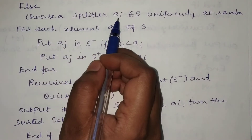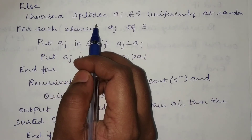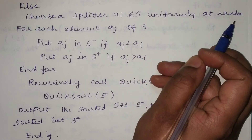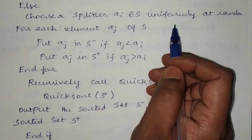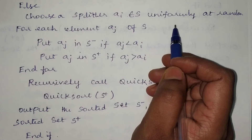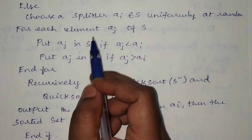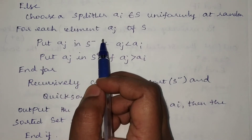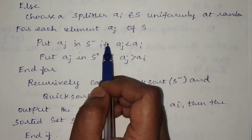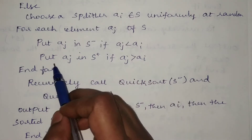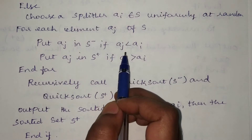Otherwise, go to the else part: choose a splitter ai that belongs to S uniformly at random. We randomly select any one element from the given input list, and based on the selected element we divide the given list into two groups. For each element aj of S, put aj in S⁻ if aj is less than ai, and put aj in S⁺ if aj is greater than ai.